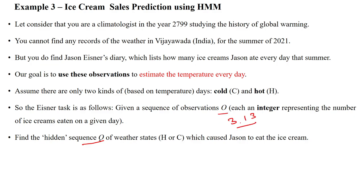Jason eats these ice creams over the given three days. We have to identify what is the hidden state of the first day — either hot or cold. What is the second day's hidden state based upon the observation of one ice cream eaten by Jason — hot or cold? Likewise, what is the hidden state on the third day by consuming three ice creams — hot or cold?